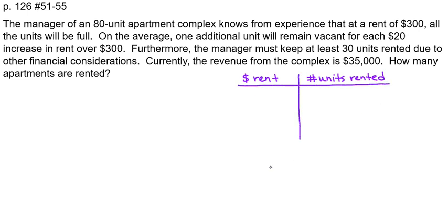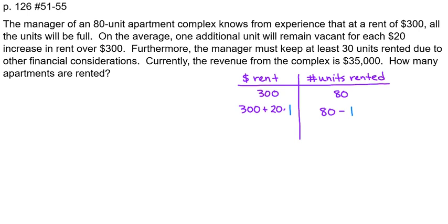We saw in the problem that if the rent is $300, then 80 units will be rented — the apartment complex is full. However, if they increase the price, let's say one $20 increase, the number of units rented will be 80 minus 1. One increase in price means one fewer unit rented — one unit will remain vacant.